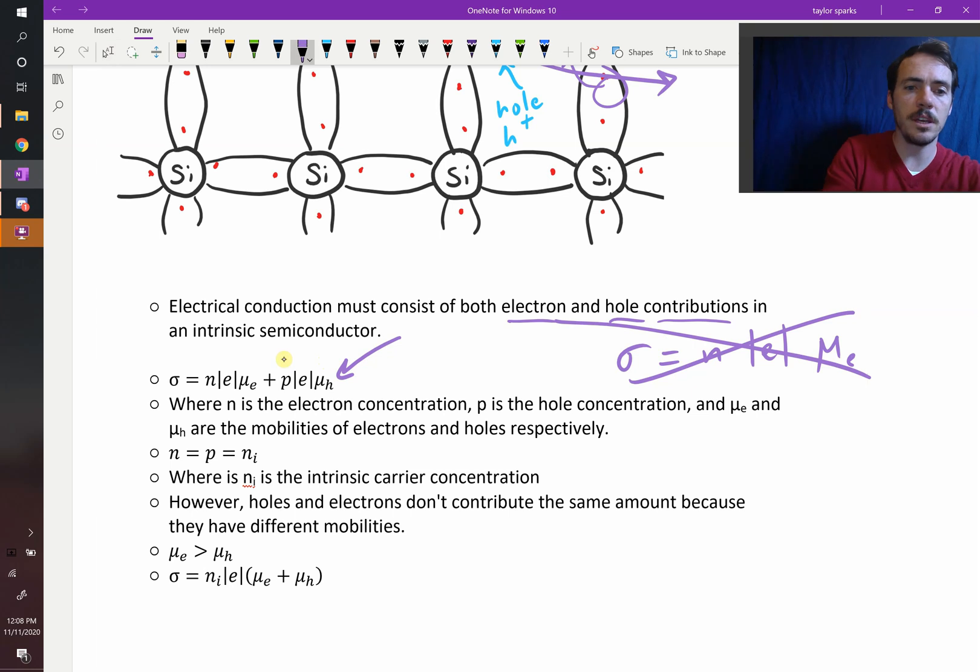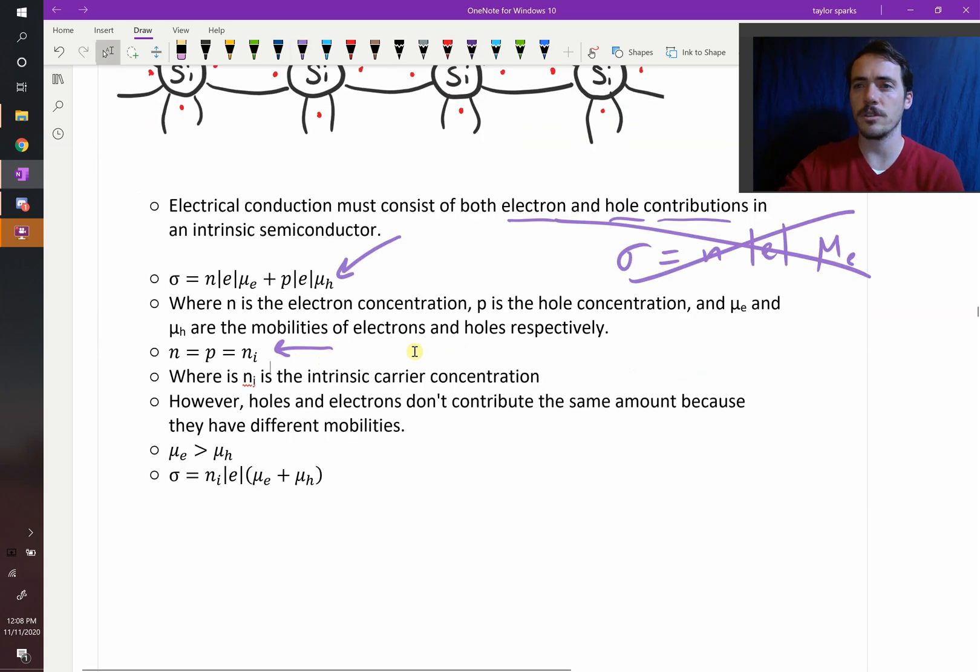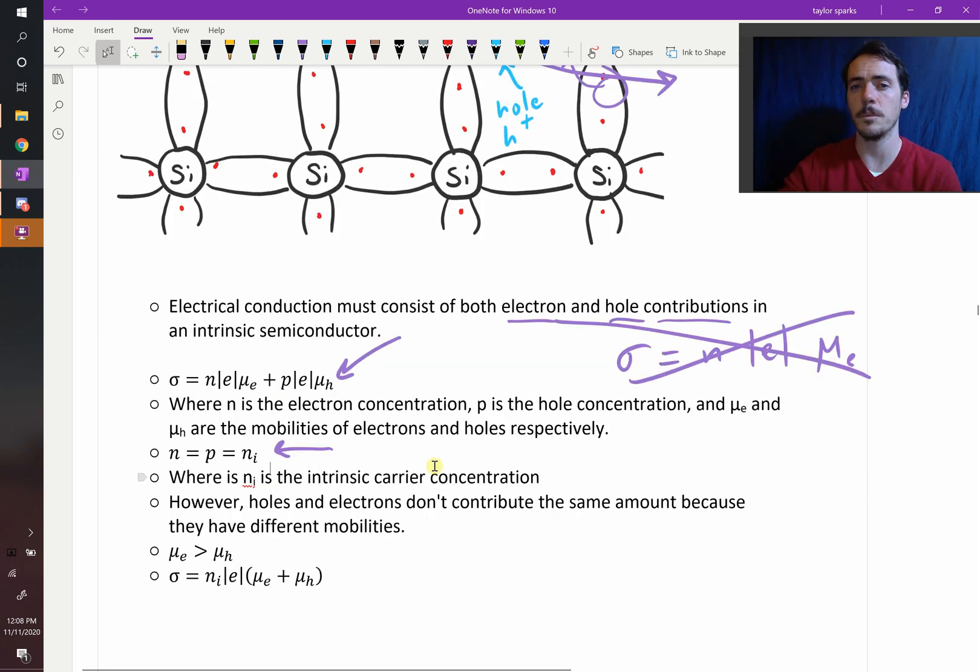So n is equal to P is equal to i, ni is usually what we call it, our intrinsic carrier concentration. If we know our intrinsic carrier concentration, then that allows us to simplify this expression up here to this one: n sub i times the charge of electrons times the mobility of our electrons plus our mobility of our holes. That will give us our electrical conductivity for an intrinsic semiconductor.